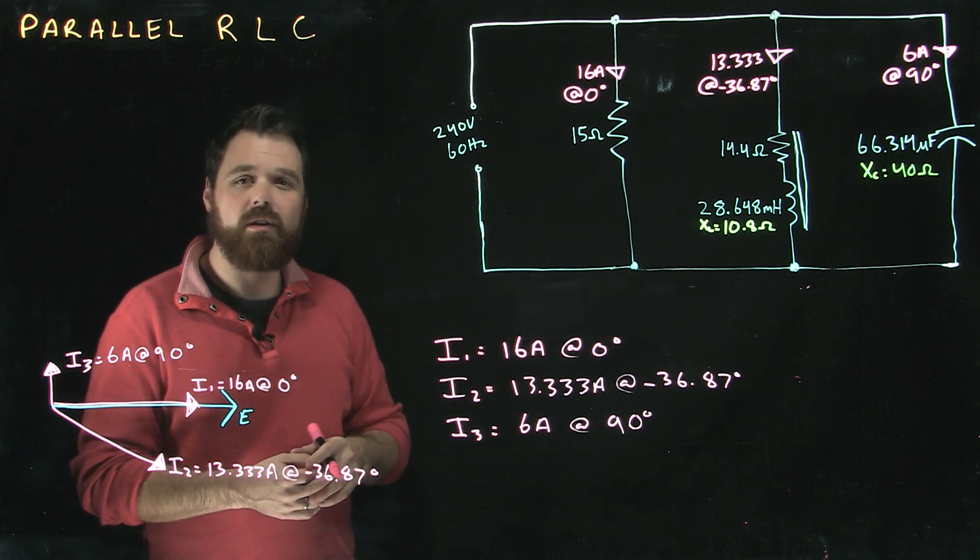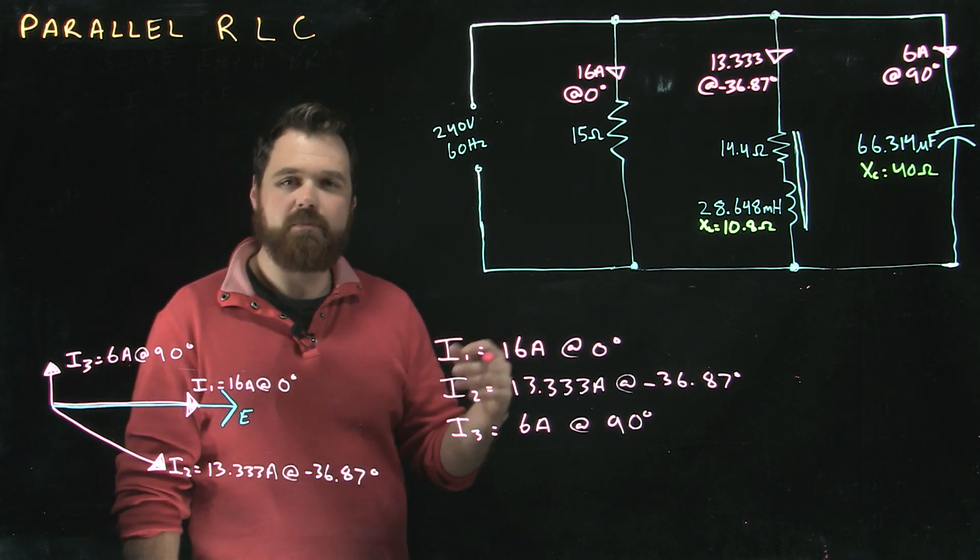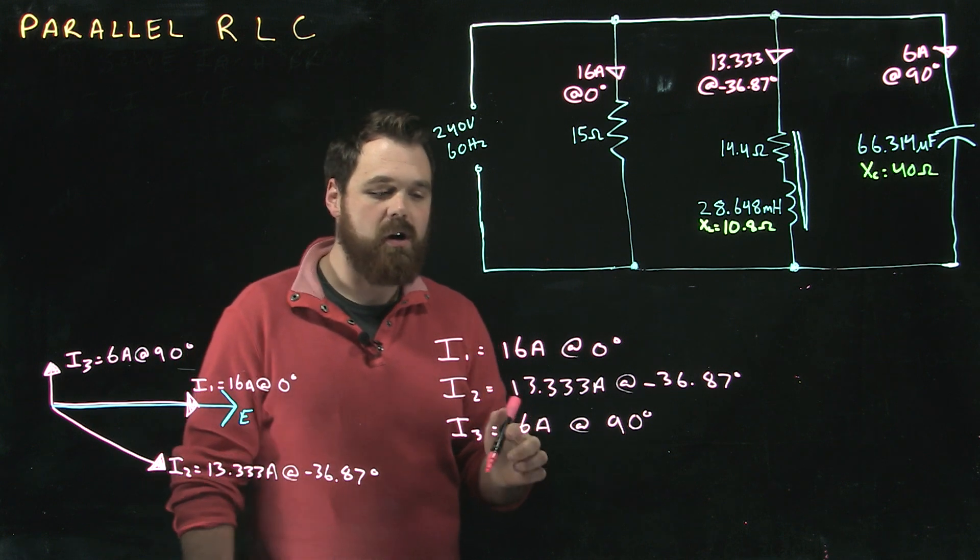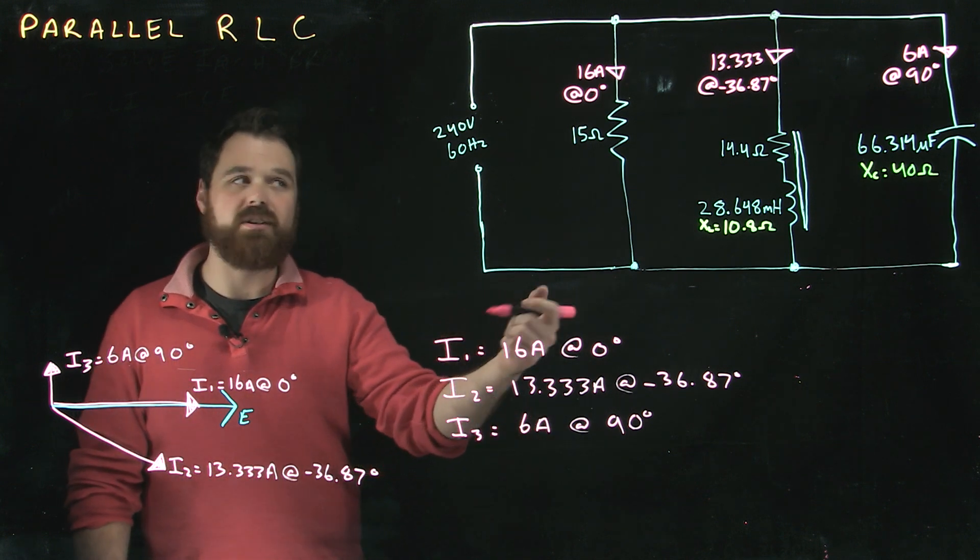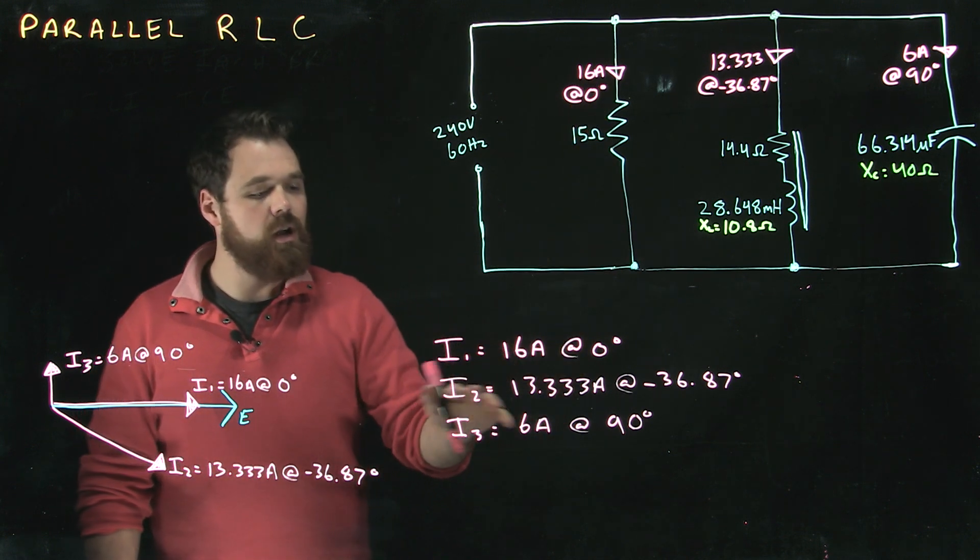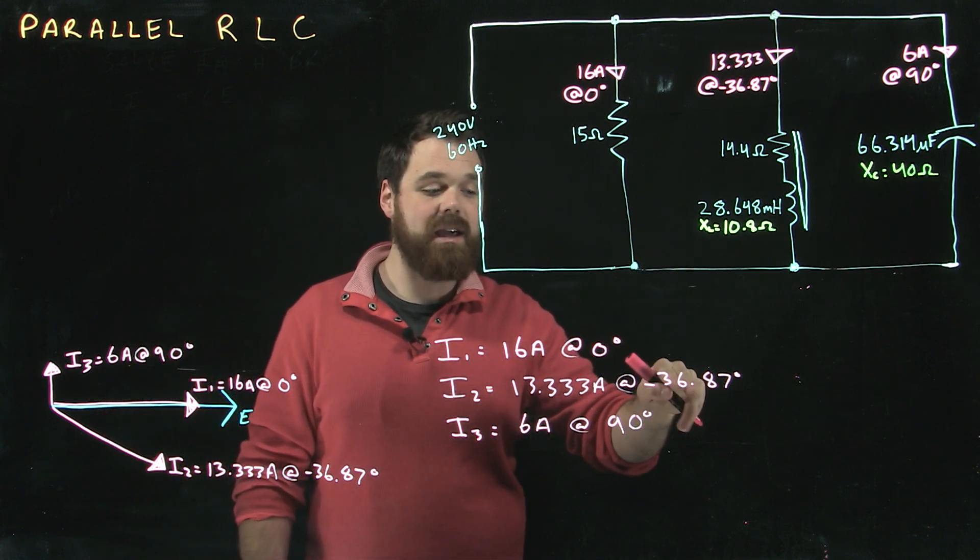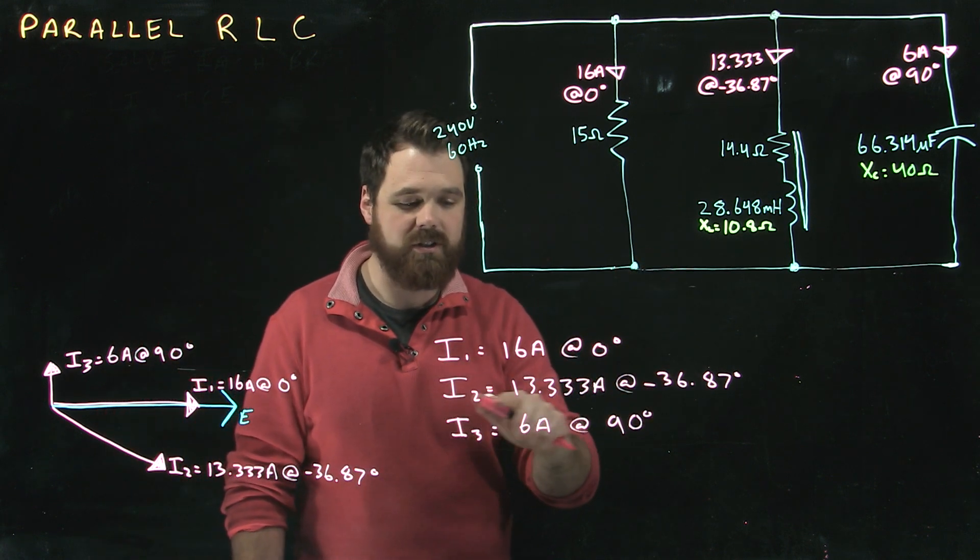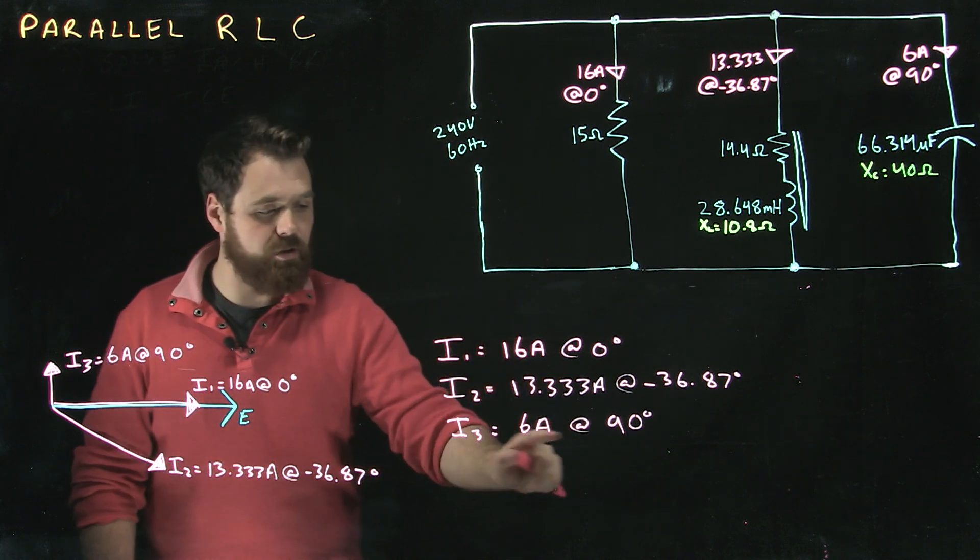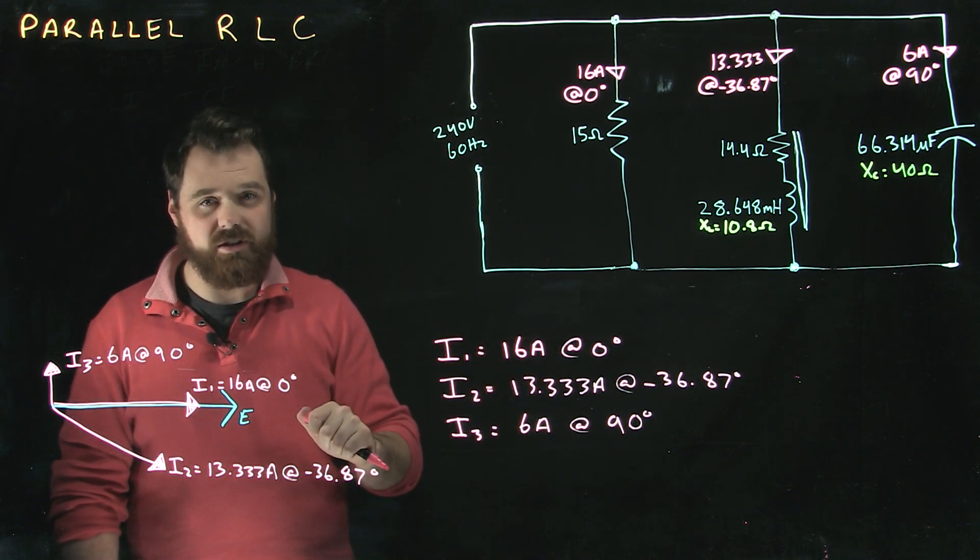Just like every parallel circuit, our I total is going to be I1 plus I2 plus I3. Only now we have I1 occurring at zero degrees across the resistor, I2 occurring at negative 36.87 degrees across the coil, and I3 at 90 degrees across the inductor.